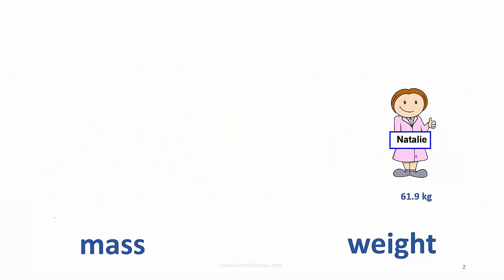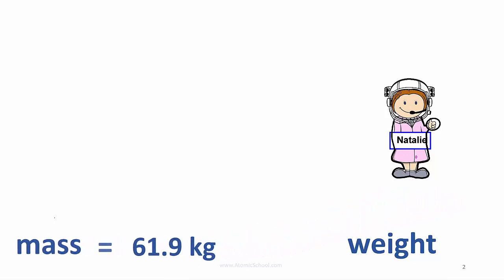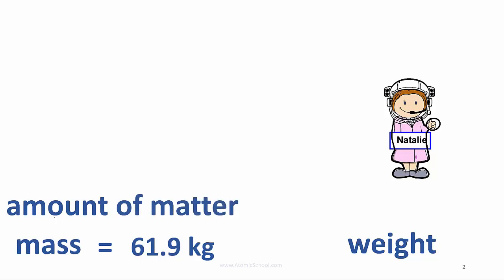To get the difference, let's imagine that Natalie becomes an astronaut and that her suit weighs almost nothing. Her mass is 61.9 kilograms and tells us the amount of matter she's made of. And this depends on how many and what kind of atoms she's made of.